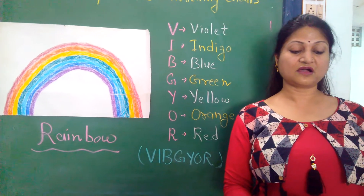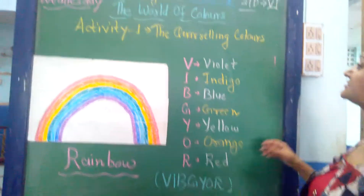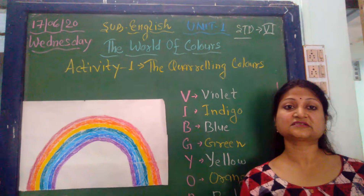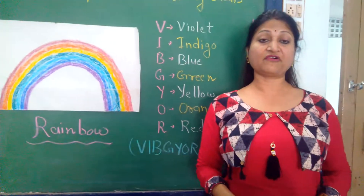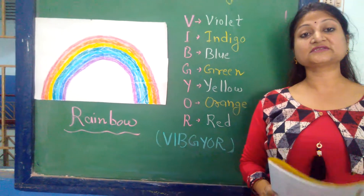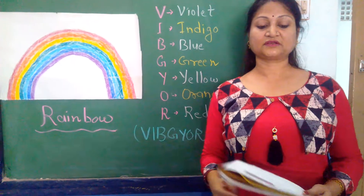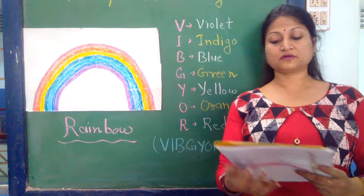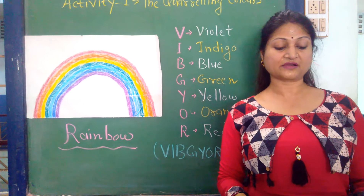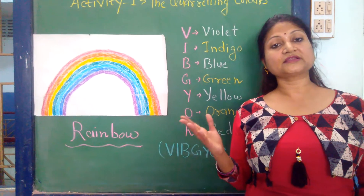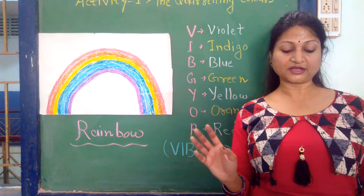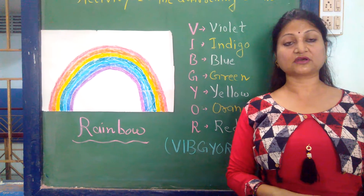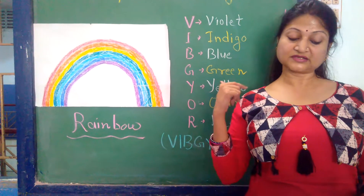Now let's come to our lesson. Our lesson name is 'The Quarrel of Colors' — colors mein fighting. This is a very interesting story about colors. Long, long ago, the colors in the rainbow started to quarrel. Each color thought it was the most important color of all — her color yahi soch raha tha ki main sabse important hoon.